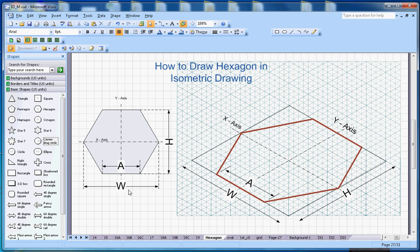You need three dimensions: height, width, and the base of the hexagon. Then you draw this rectangle in an isometric drawing. As you know, in isometric drawing you need to draw the line.